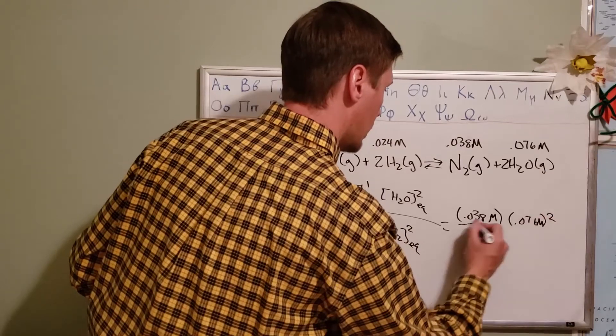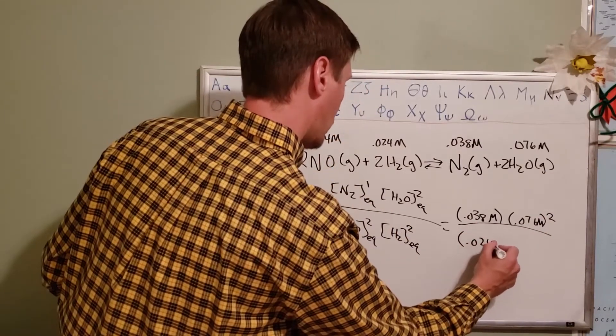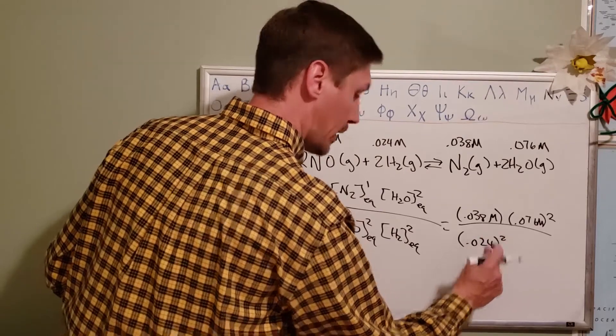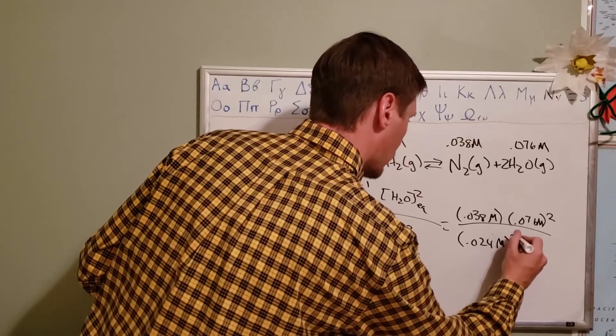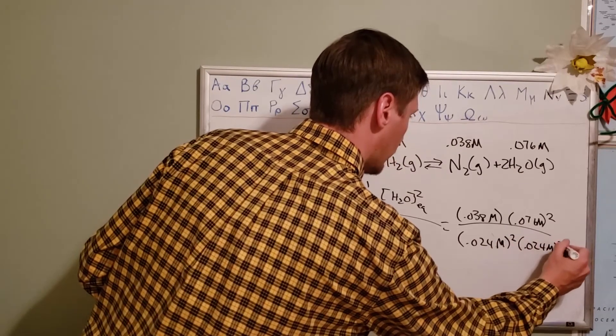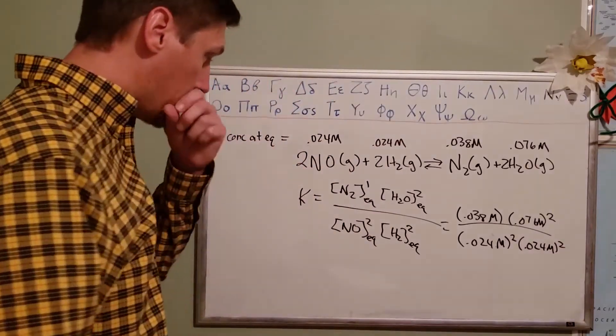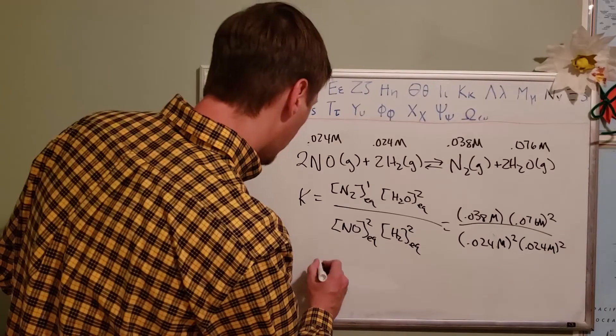This one is 0.076 squared molarity. This one here is 0.024 squared molarity, and then that times 0.024. We punch all of that in our calculator and we come up with a value of 660.